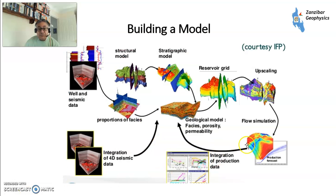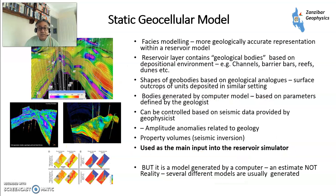This is a graphic from IFP — Institut Français du Pétrole — showing all the different models: structural models, stratigraphical models, then you make a reservoir grid, and then you do flow simulations. The first thing you do is build a static geocellular model using software like Petrel, Skua, or GoCAD. You do FACES modelling, looking at different rock types, layering, and shapes of various geobodies — how individual rock units behave. The bodies can be generated by a computer model based on parameters defined by a geologist. A lot of stochastic modelling started developing in the late 1990s. You can also use seismic data to help constrain that and use it as the main input to your reservoir simulator. Several different models would usually be generated — some by what I'd call a deranged geologist, and I've met some pretty deranged geologists — lovely people, though.